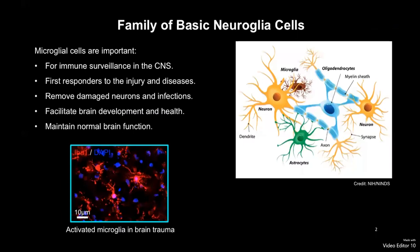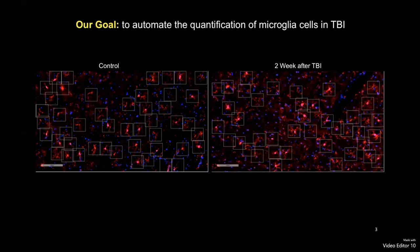Briefly, microglia cells are important glia cells in the central nervous system for immune surveillance, defense, and maintaining normal brain functions. They are the first responders to injury and diseases and act to remove damaged neurons and infections.